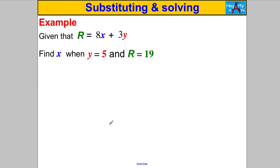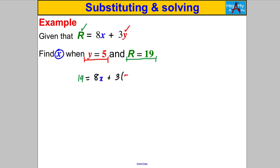Let's try some. Pause the video and have a go. Given R = 8x + 3y, find x when y=5 and R=19. R is given as 19 and y is given as 5, so we substitute those in. We write: 19 = 8x + 3(5). I put the 5 in a bracket to remind me to multiply — without the bracket it might look like 35. That gives us 19 = 8x + 15.